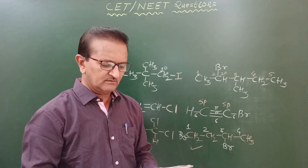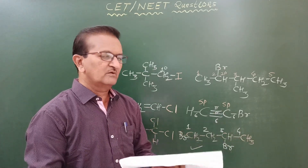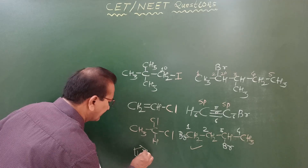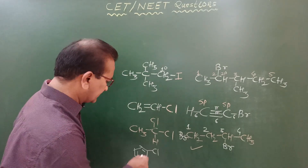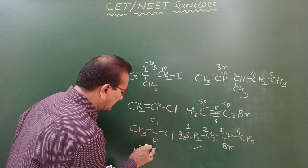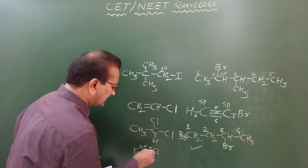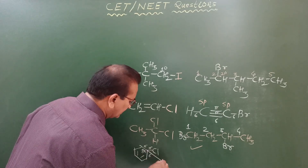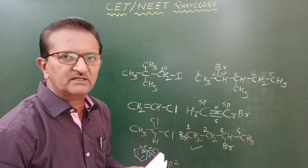Question 9: In a haloarene, the halogen atom is bonded to a what hybridized carbon atom? The structure of a haloarene has a benzene ring with a halogen atom attached to it. In a double bond, one bond is sigma and one is pi. Whenever a carbon atom forms three sigma bonds and one pi bond, its hybridization is sp2. Therefore, in haloarenes, the halogen atom is bonded to an sp2 hybridized carbon atom.